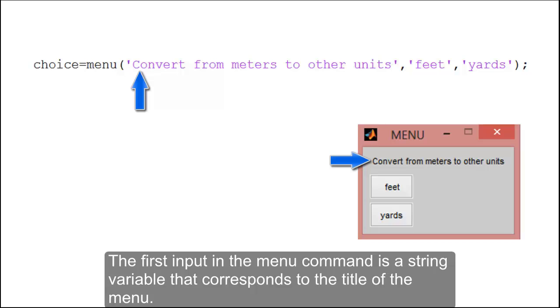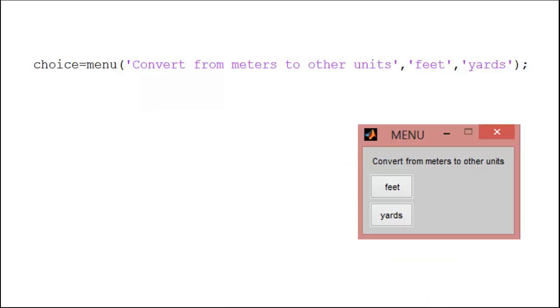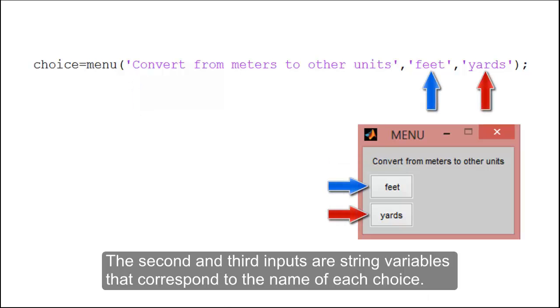The first input in the menu command is a string variable that corresponds to the title of the menu. The second and third inputs are string variables that correspond to the name of each choice.